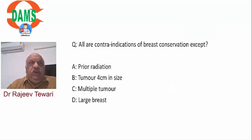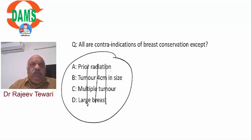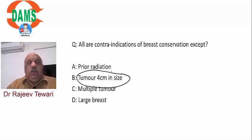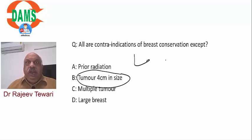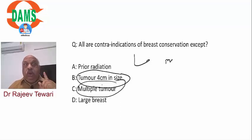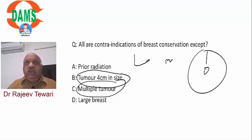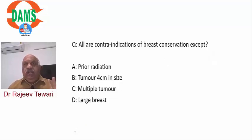Contraindications for breast conservation surgery (BCS): absolute contraindications include multicentric disease (not multifocal - multifocal is same quadrant and can still be operated), N2 nodes, homozygous ATM gene mutation, diffuse suspicious microcalcifications (BIRADS C2), and inflammatory breast cancer. Relative contraindications include size more than 5 cm, prior irradiation, collagen vascular disease, pregnancy (relative - third trimester can have surgery with post-delivery radiotherapy), and BRCA/p53 gene mutation in family members.